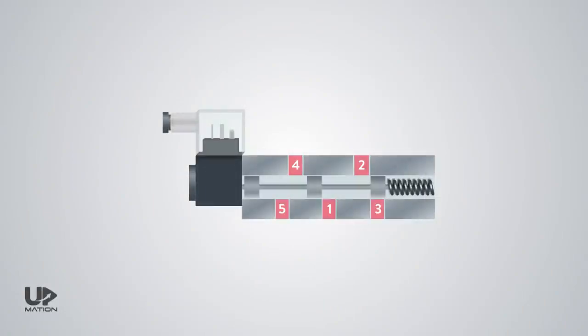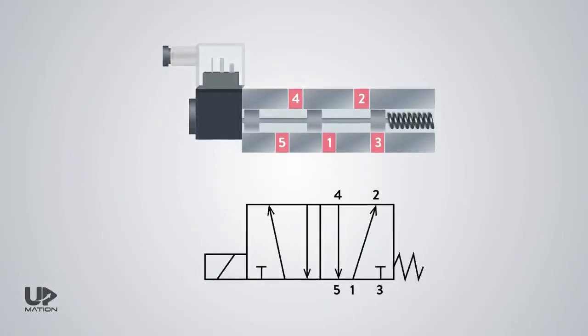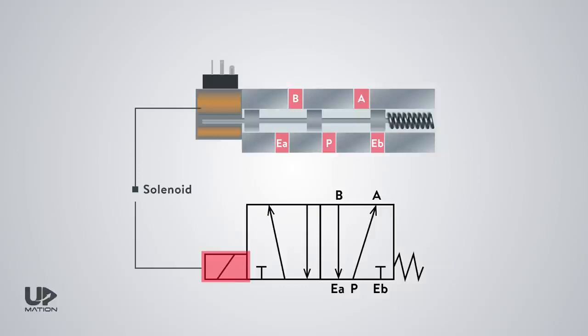As I've mentioned, this valve has 5 ports and this is the ISO designation of the ports, which is a common practice. But sometimes, you may see an alternative designation of the ports in DCVs by alphabets, in which the P is for power or pressure that comes from the air source. The EA and EB are for the exhaust ports and the A and B are the output ports to or from the actuator. This is the sign for the electric solenoid and this one is for the spring return.